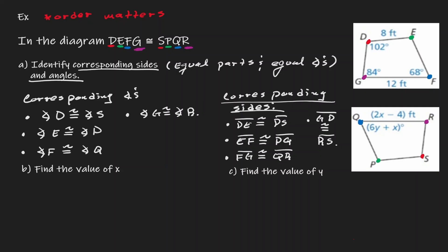In example B, we want to find the value of X. Let's start by seeing where X is. Within this diagram, we can see that X is within the expression for QR. Now, we know that QR is equal to GF — that is one of the corresponding sides that we found within our list.